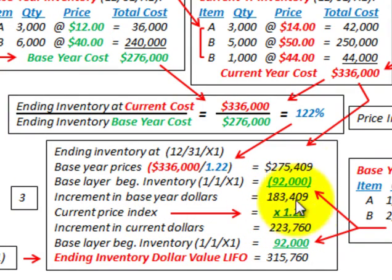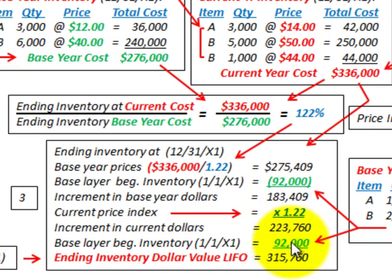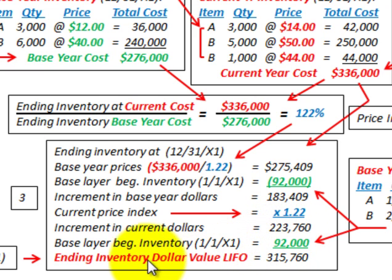We take the current price index of 122% and multiply it by the incremental base year dollars of $183,410: 1.22 × $183,410 = $223,760 in incremental current dollars. We then add back the base layer beginning inventory of $92,000. So $92,000 plus $223,760 gives us an ending inventory dollar value LIFO amount of $315,760.